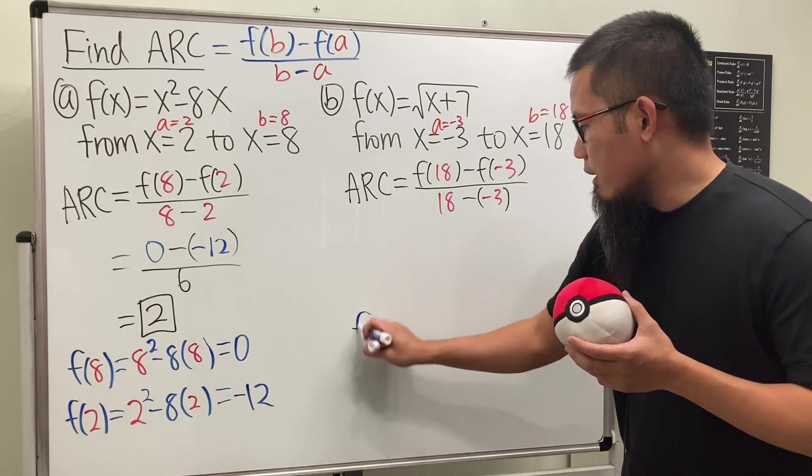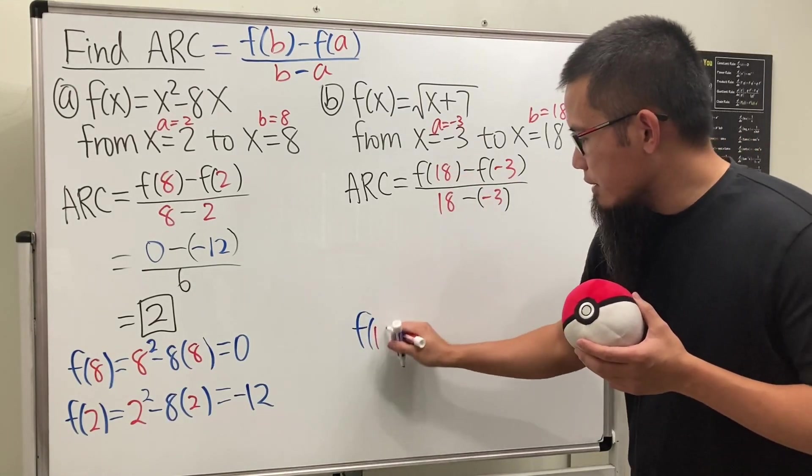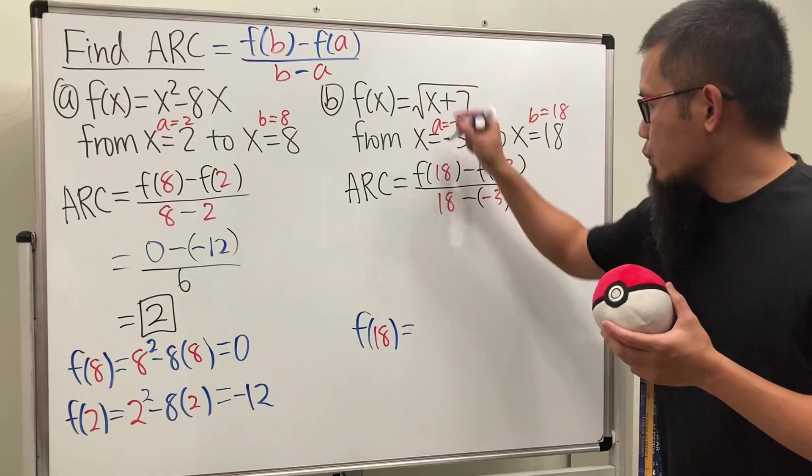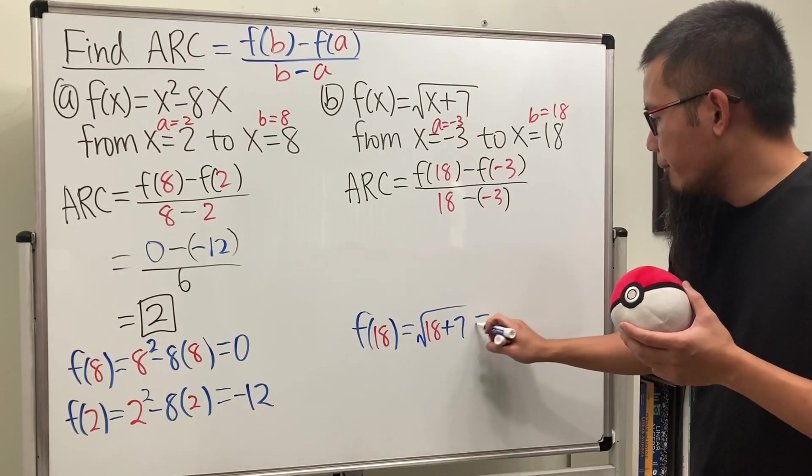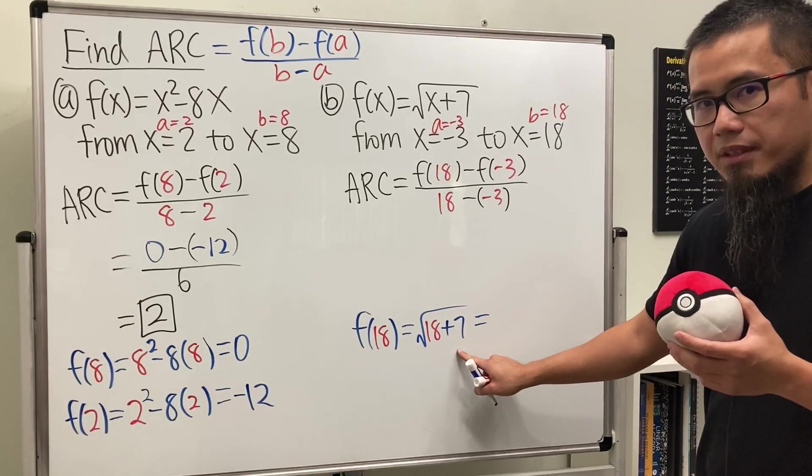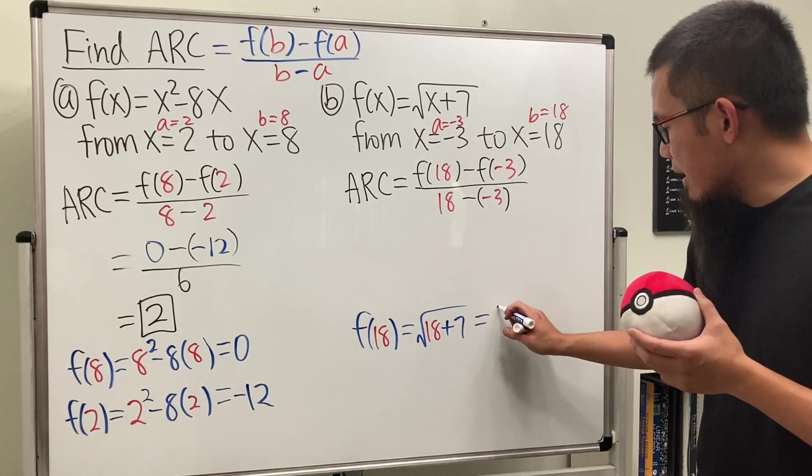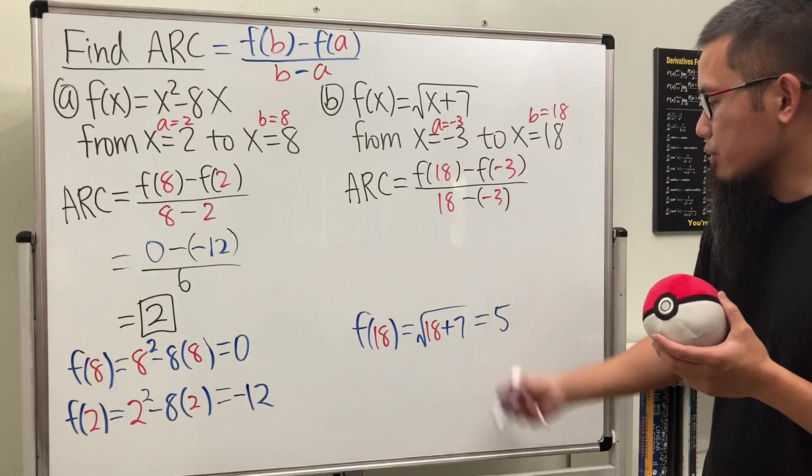I will again do this and that somewhere else. Let's say down here. So we have f of 18 first. This right here means we will have square root of 18 plus 7. That's 25 in the square root, and we get 5 after we cancel the square root and the 25.